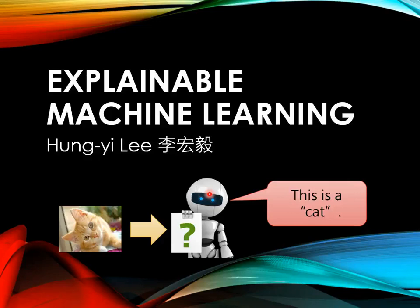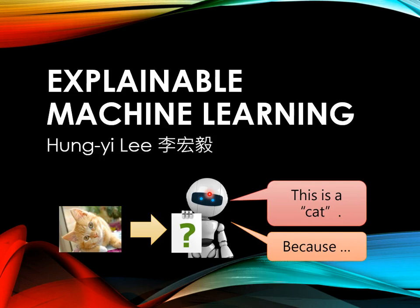Let's talk about explainable machine learning. So far, we have trained many, many models. We have trained a model for image recognition — give it a picture, it will give you the answer. But we are not satisfied with this. Next, we want the machine to give us the reason it gets the answer. This is explainable machine learning.